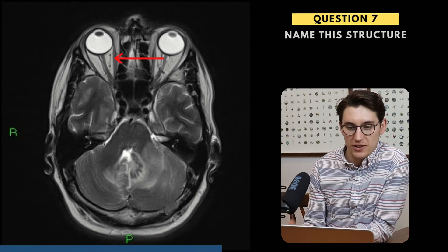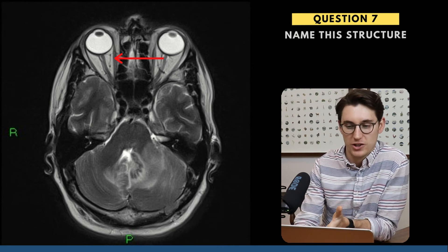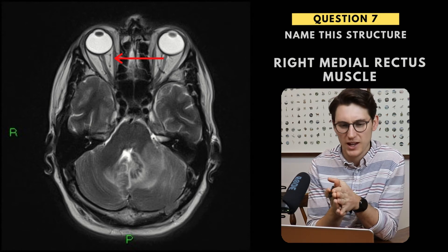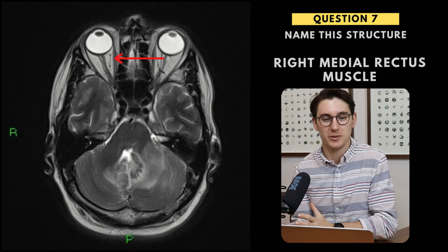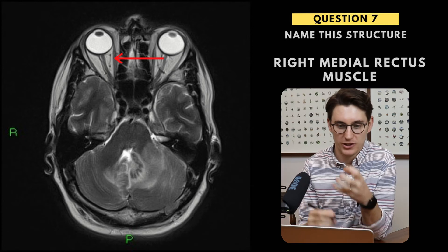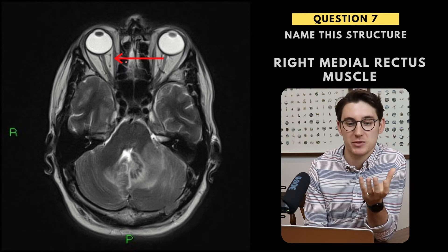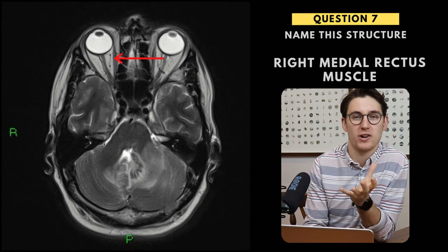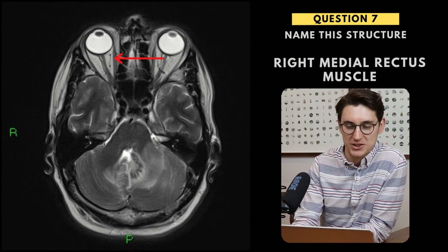Question seven — a relatively simple question. We're asked to label this structure, and this is the right medial rectus muscle. Be careful not to get confused between right-sided and medial. When looking at an image like this, you need to lateralize the muscle you're naming, and know that this is the medial rectus. It's a very easy mistake to say left medial or right lateral — just make sure you're getting your lateralization right.